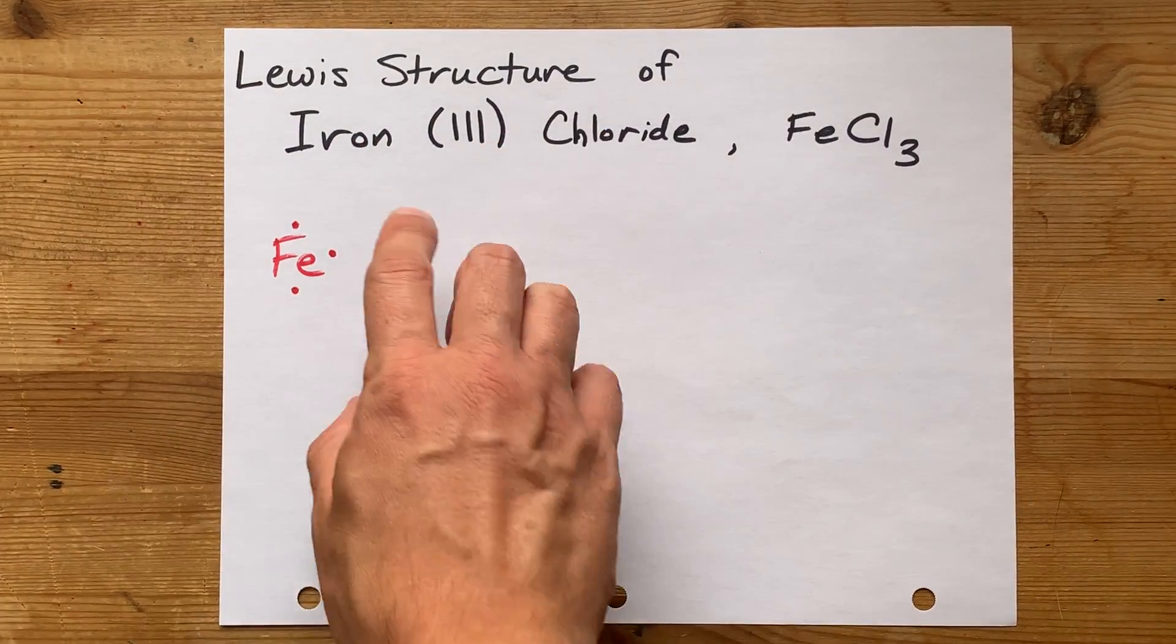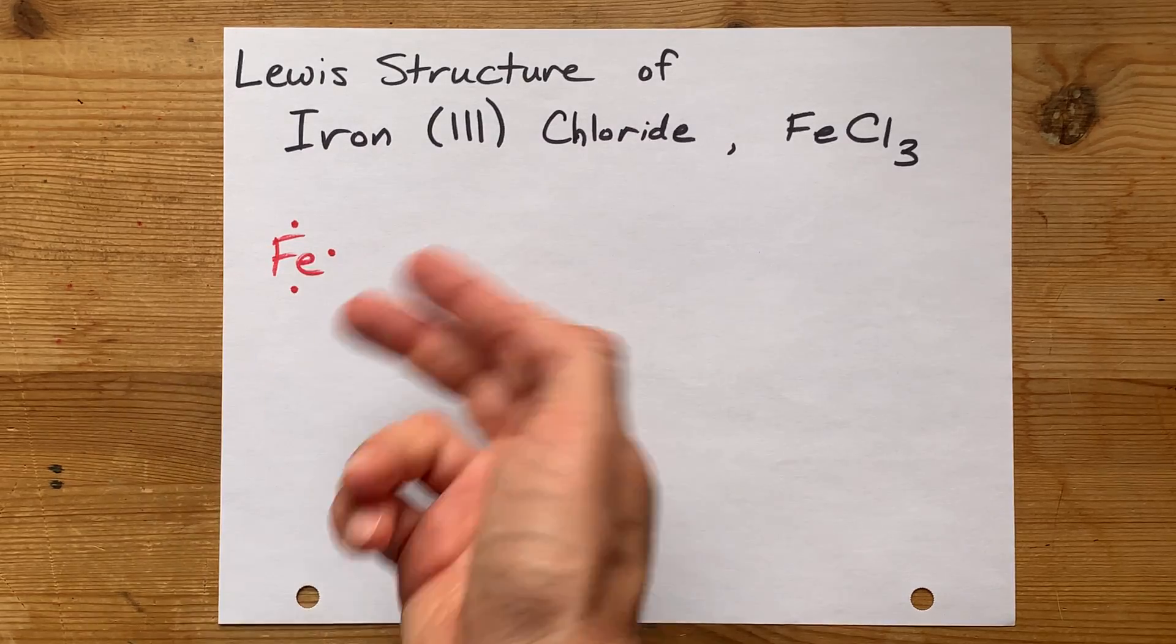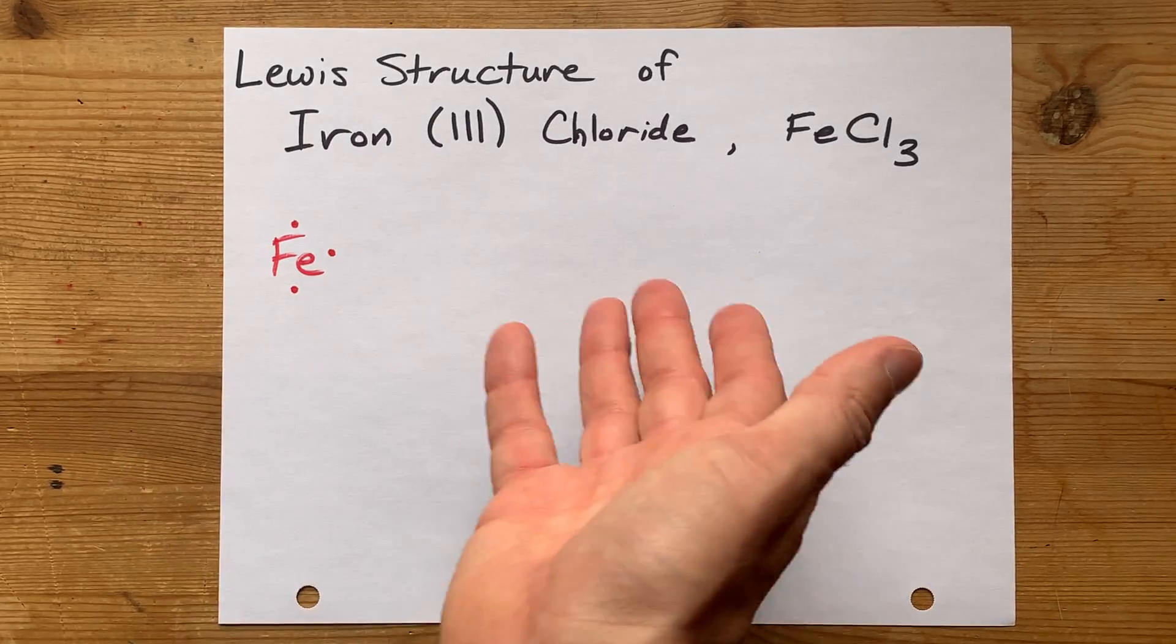If you're being asked for iron 2 chloride, I want you to start with two valence electrons instead. Get it?